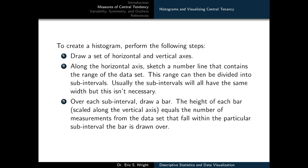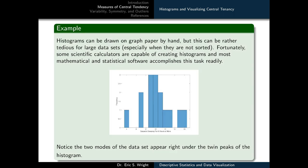Over each subinterval, draw a vertical bar. The height of each bar, scaled along the vertical axis, equals the number of measurements from the dataset that fall within that subinterval. Applying this procedure to our dataset, you should arrive at a figure qualitatively similar to the one depicted on screen. Notice that the two modes of the dataset — 9 and 10 — appear right under the twin peaks of the histogram. The peaks line up with the modes of a dataset.